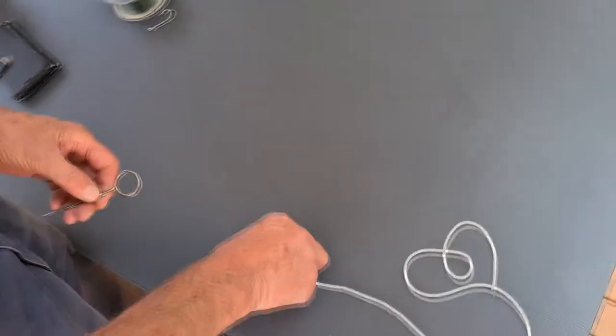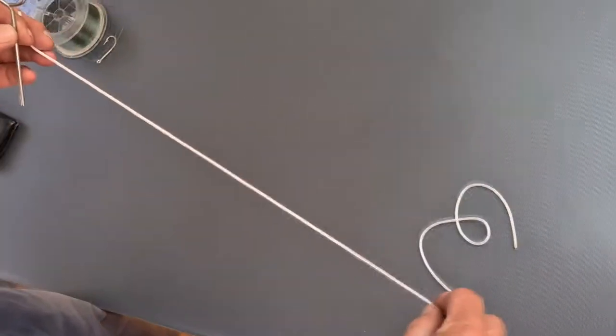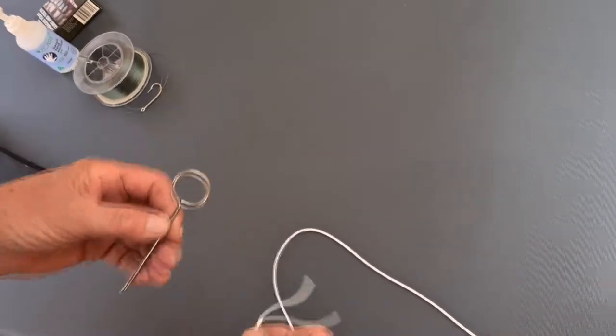Alright, so here we are in Ditta's workshop and we're going to do some knots. First, we'll start off with a string and a loop to make it a little bit easier to follow. So what knot are we doing today, Ditta?